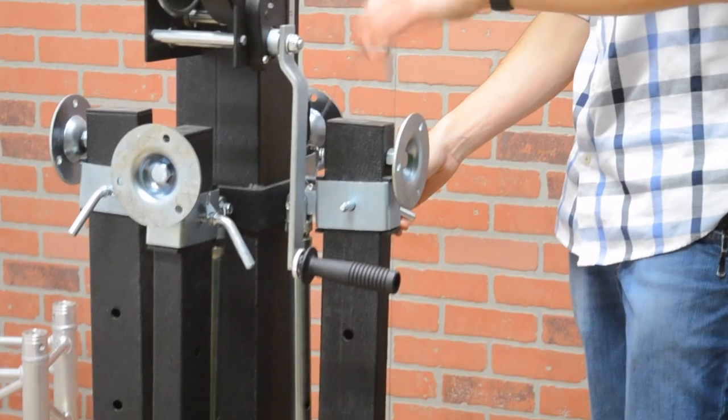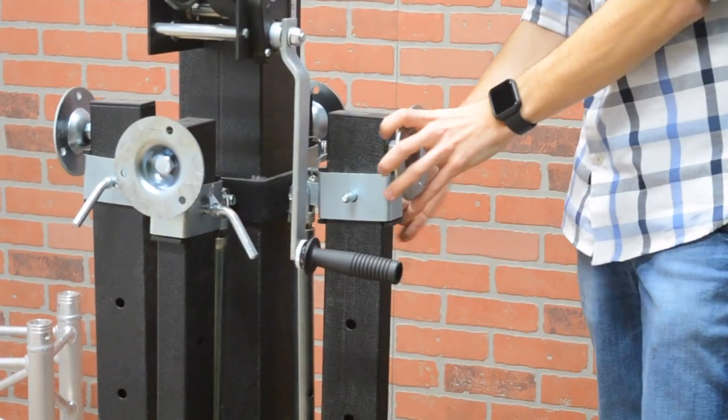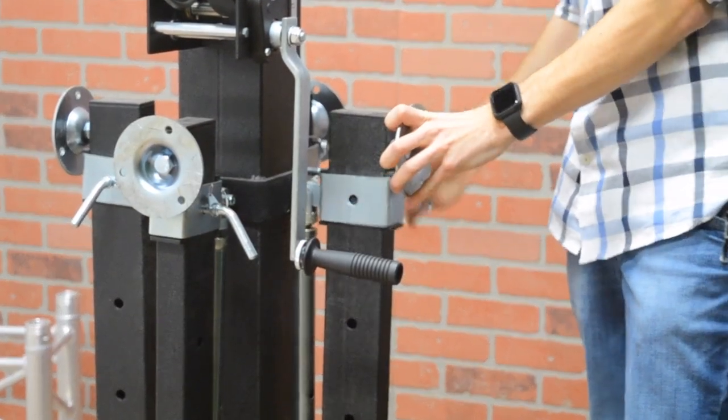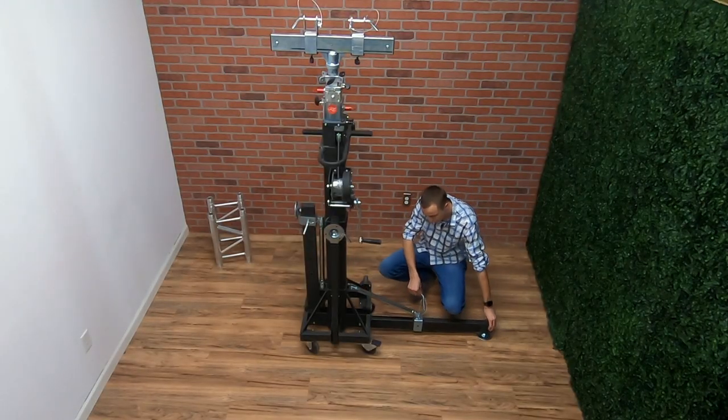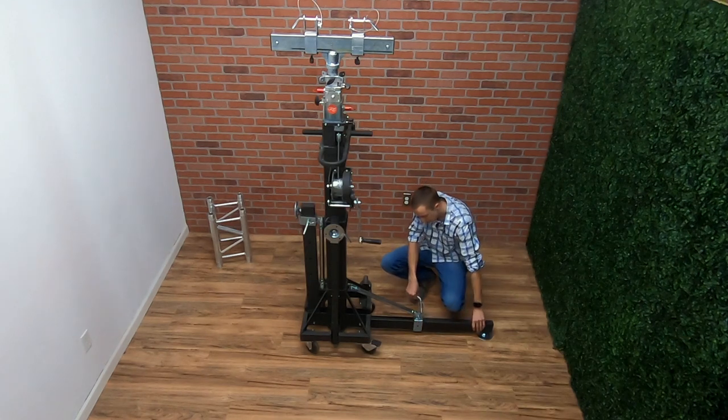So the first thing you're going to want to do is remove the safety pin or the cotter pin that stays attached, and then remove this pin itself from the outrigger. You'll see the outrigger will then begin to drop down. You can drop it all the way till the last hole on the leg.